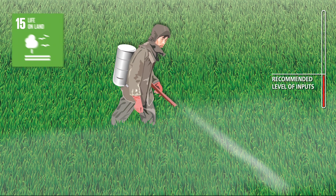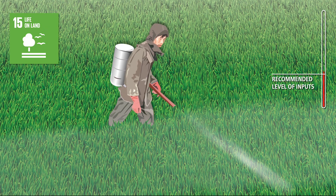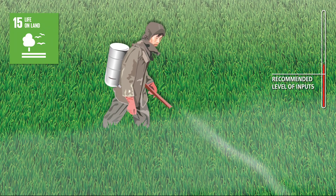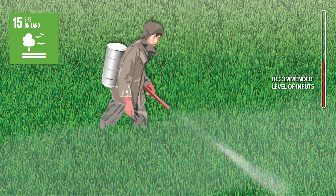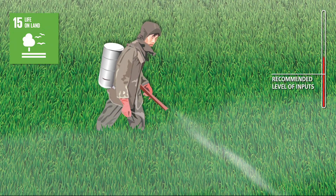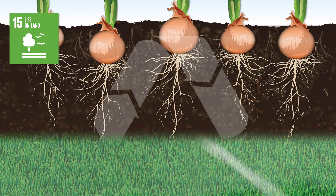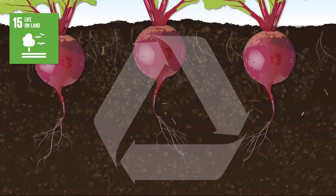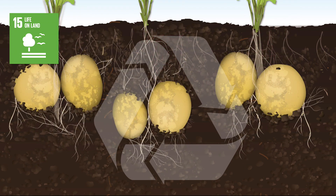One of the causes of soil degradation is the overuse of agricultural inputs. Instead, we should maintain and increase the organic matter content of the soil by promoting crop rotation and diversification.